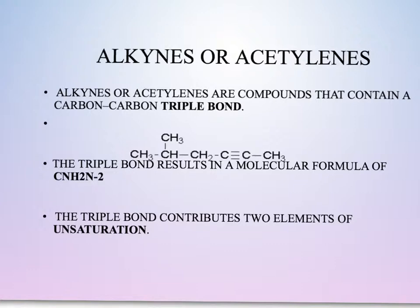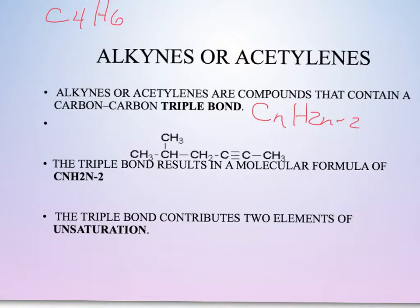If a hydrocarbon has a triple bond present, that compound is known as an alkyne. Alkynes are unsaturated because if the triple bond were broken, the carbons could hold additional hydrogen. The general formula for an alkyne is CnH(2n−2). For example, a compound with four carbons would have the formula C4H6 (2×4 − 2 = 6).